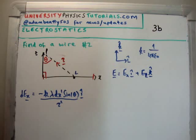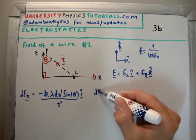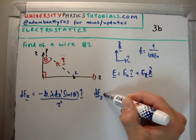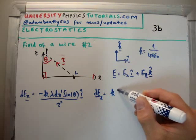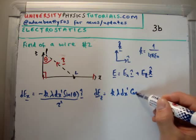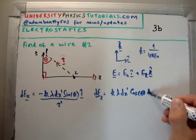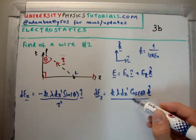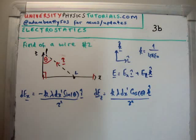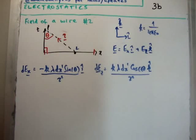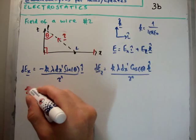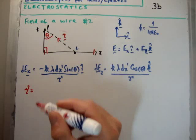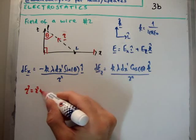And dE sub z is similar but it's going to be k lambda dz prime cos theta k-hat divided by squiggle squared. That's pretty straightforward stuff. As I'm sure you're well able to see, the separation vector squared is equal to z² + x².